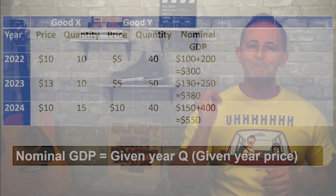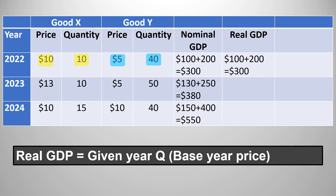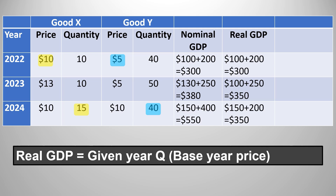For real GDP, our goal is to only measure output changes and to control for price level. So no matter what year we're in, we're going to use the base year prices — in this case, 2022. In 2022, real GDP will be the same as nominal GDP because we're in the base year. In 2023, we do $10 times 10 equals $100, then $5 times 50 which equals $250. Add those together, and real GDP equals $350. Do it again for 2024: $10 times 15 and $5 times 40 equals $350. Notice how different the picture painted by real and nominal GDP is. Nominal GDP rose each year and pretty significantly in 2024, but real GDP shows us that nominal growth was an illusion — it was all caused by an increase in prices. Real GDP didn't actually increase at all in 2024.